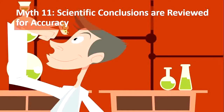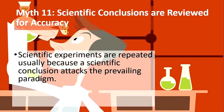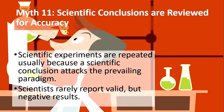The next myth is that scientific conclusions are reviewed for accuracy. It is not true. Scientific experiments are repeated usually because a scientific conclusion attacks the prevailing paradigm — when someone attacks the prevailing paradigm, scientists redo their experiments to verify the conclusion. Many times scientists do not get the results they are expecting, but they rarely report valid or negative results in their publications. The basis of knowledge in science are journals which mostly report valid and positive results, creating the myth that scientific conclusions are always reviewed for accuracy.